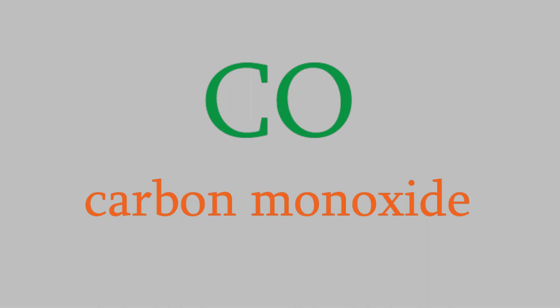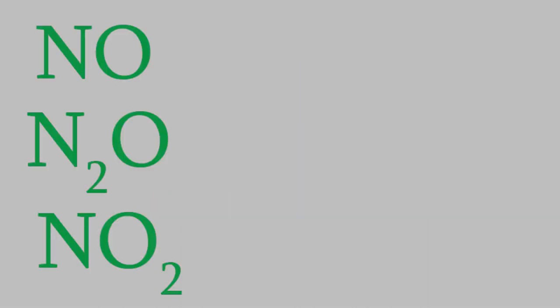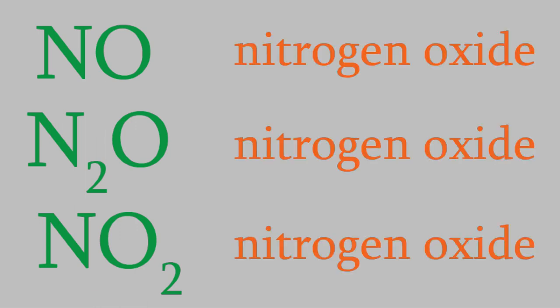Being able to name molecular compounds like these is pretty easy, but it's an important skill, and it could even save your life. For example, take these three molecules. They all contain only nitrogen and oxygen, so we'd start by giving them the same basic name, nitrogen oxide. But the prefixes will be different for all three.